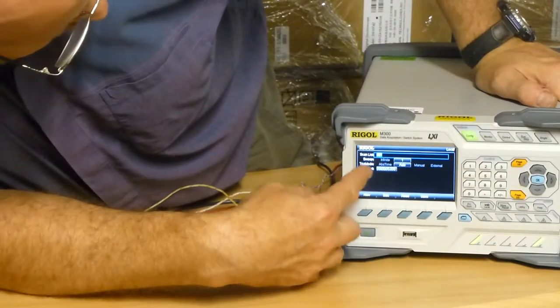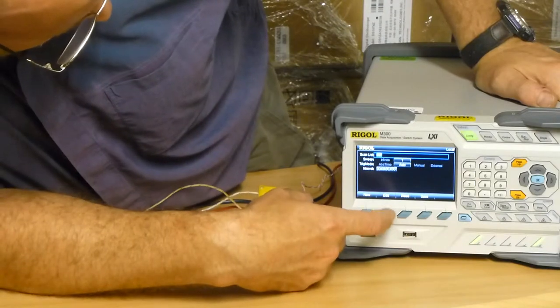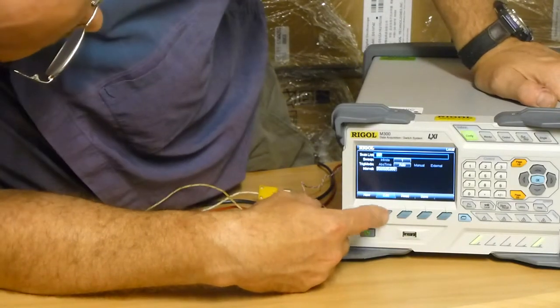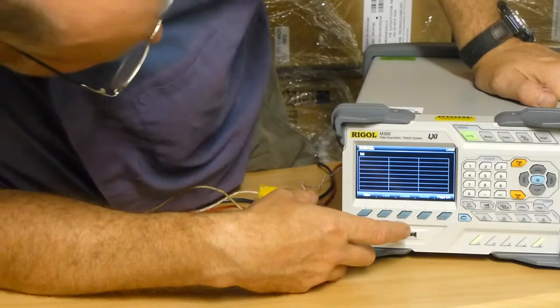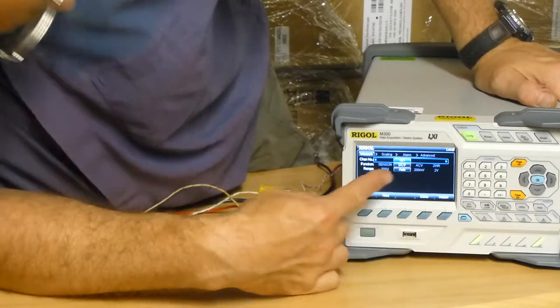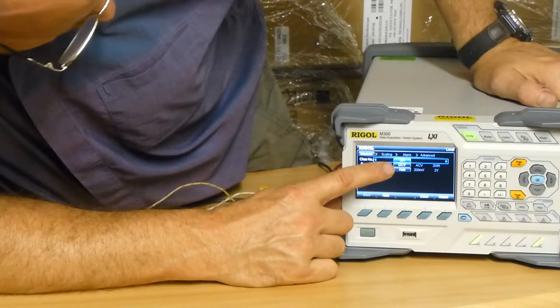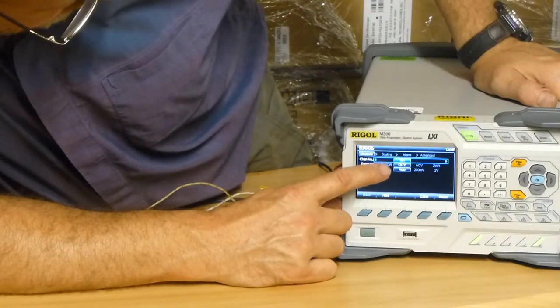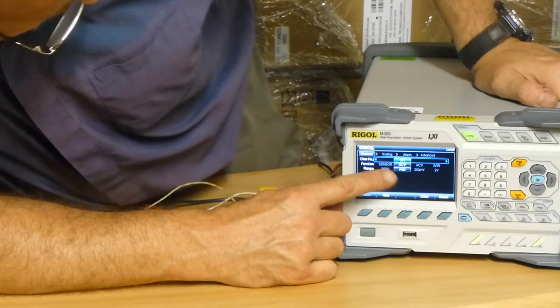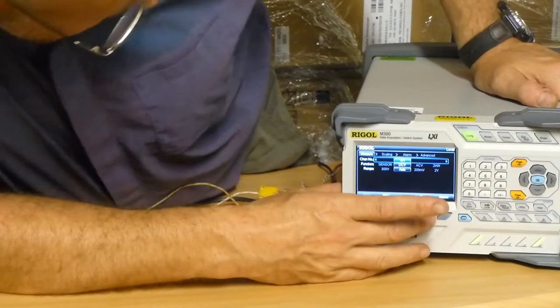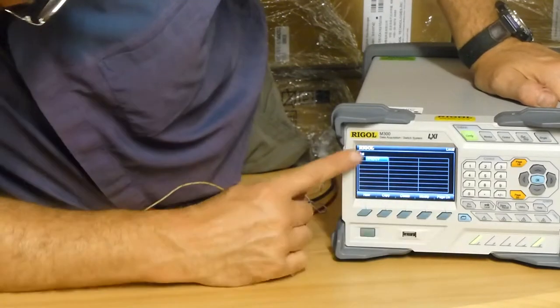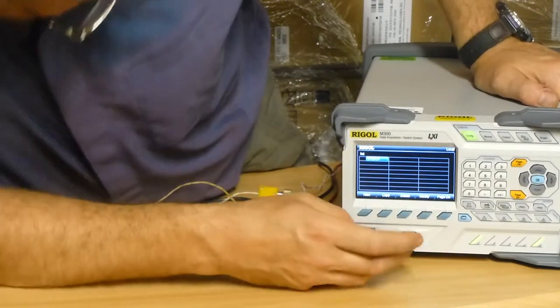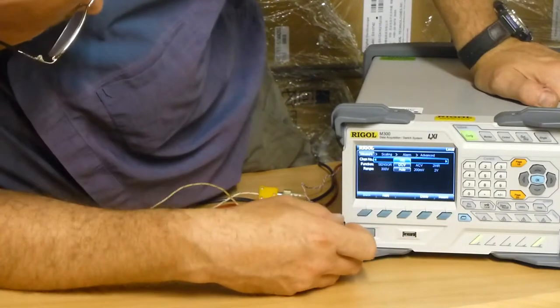This is the channel configuration menu. I'm going to edit so that we have a channel, a new channel. Immediately you can see it gives me the chance to make channel one a DC voltage measurement.